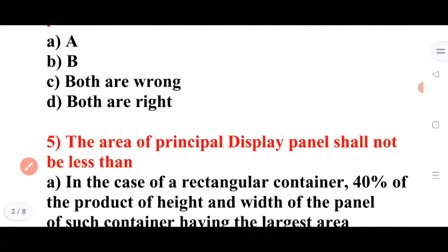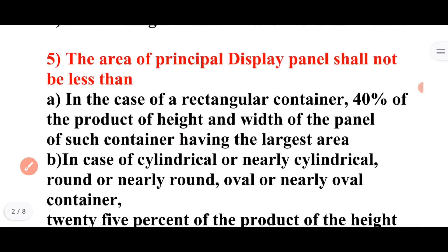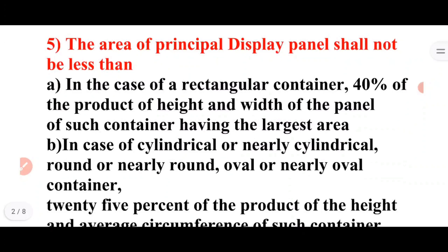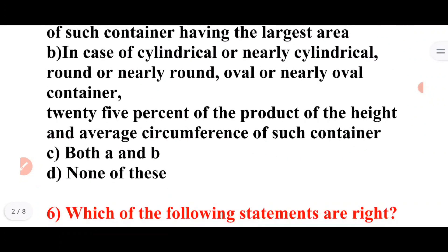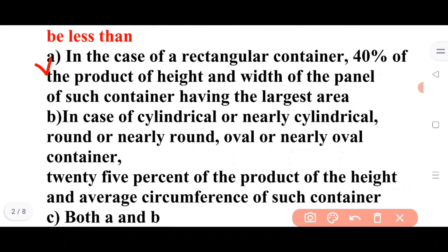Next question: The area of the principal display panel shall not be less than — Option A: in the case of a rectangular container, 40% of the product of height and width of the panel of such container having the largest area. Option B: in case of cylindrical, rounded, or oval container, 25% of the product of height and average circumference. Answer: A is the correct answer.